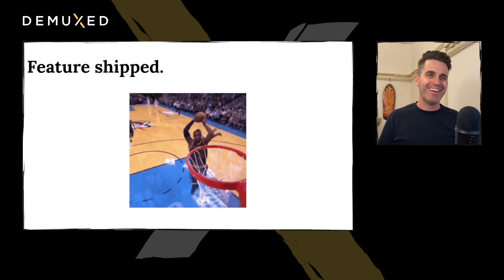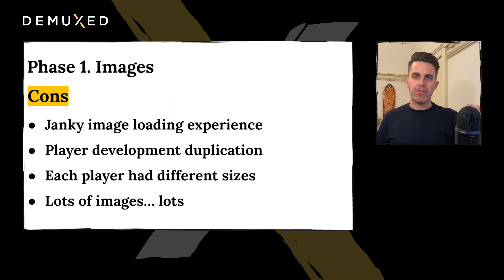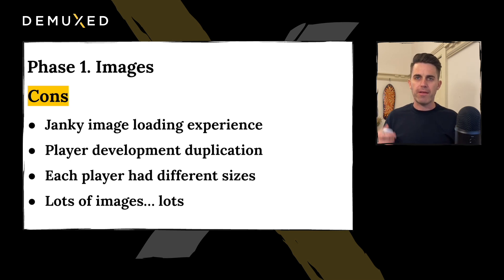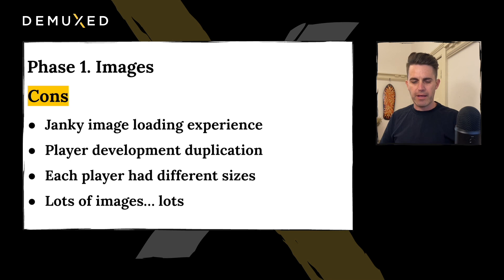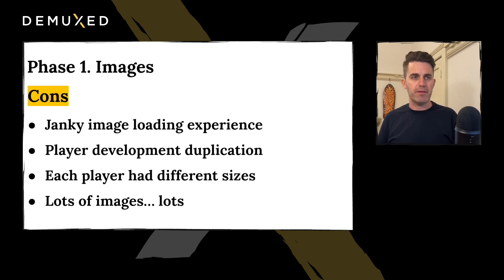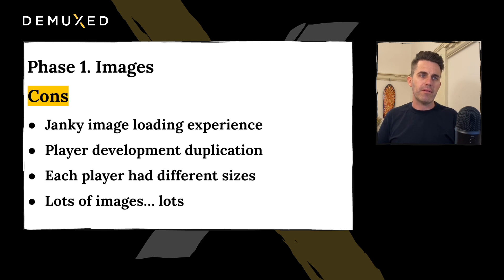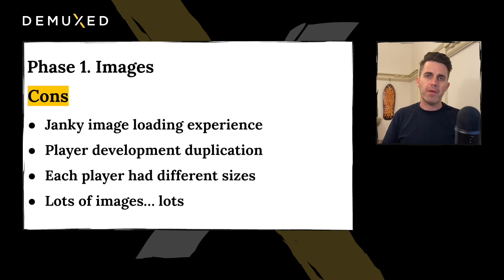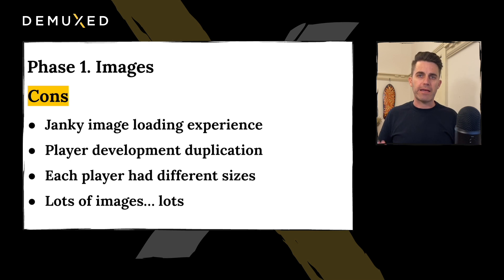But that's not exactly what happened, because immediately we found all these disadvantages to the solution. There was a janky image-loading experience as an image would be fetched while the user scrubbed along — you couldn't pre-download all the images before the user scrubbed, that would be ridiculous. We were building player development to handle positioning and things that were already native to a lot of players, and teams had to redevelop it on connected TV, then again on another brand of television — it became cumbersome. Each player required a different image size because of TV versus phone. Every 5 seconds was a magic number we made up, which created lots of images.